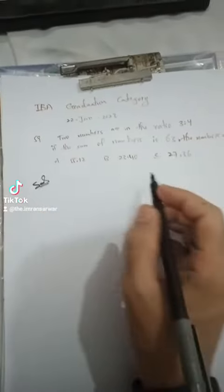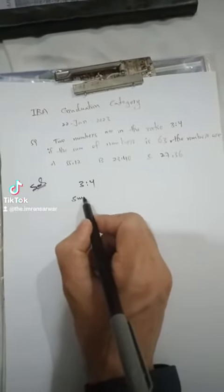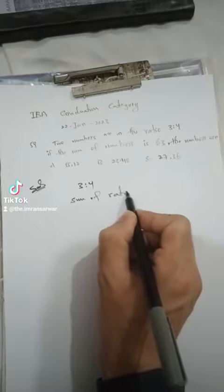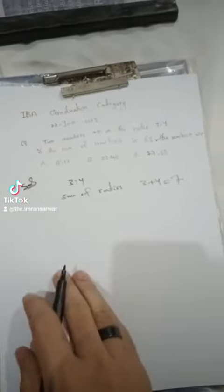Solution: First of all, for ratio 3:4, find sum of ratios. 3 plus 4 is equal to 7.